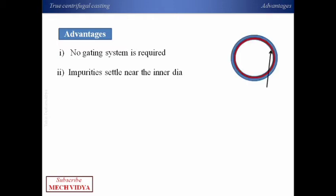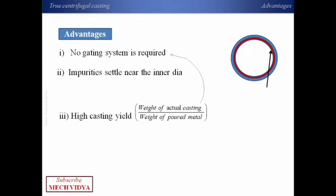Now let us see some advantages of this true centrifugal casting. The first advantage is that here we do not need any gating system, because as we have seen, we poured the molten metal directly inside the rotating mold. Second, the impurities settle near the inner diameter because the impurities are lighter than the parent metal. Finally, this layer of impurities can be scrapped away using machining operations.